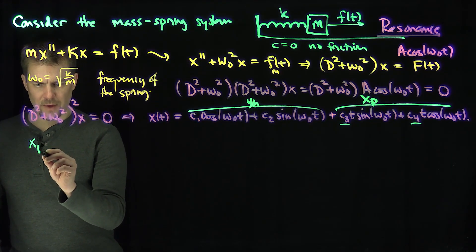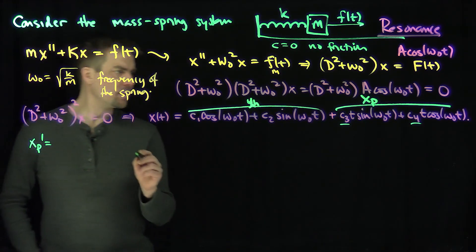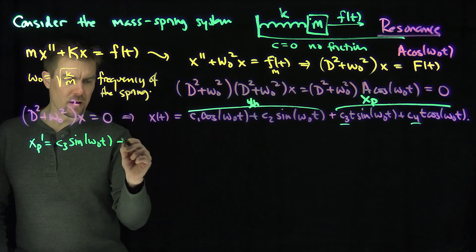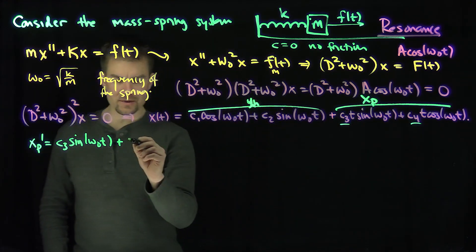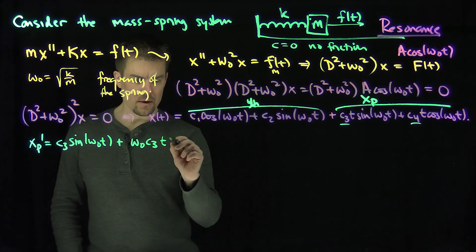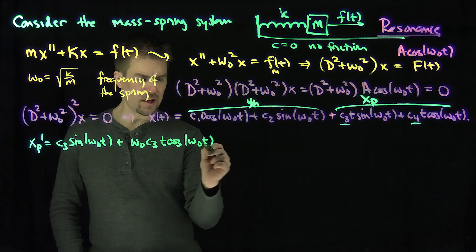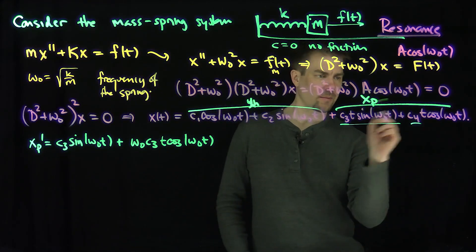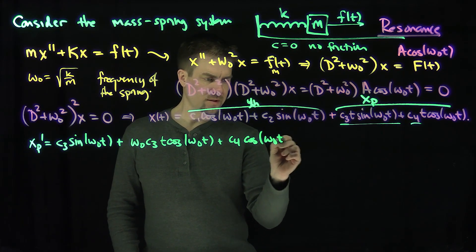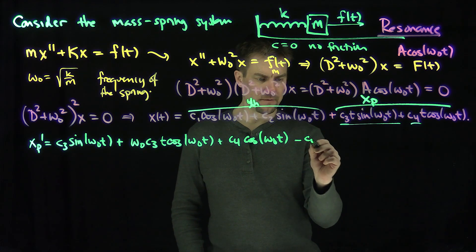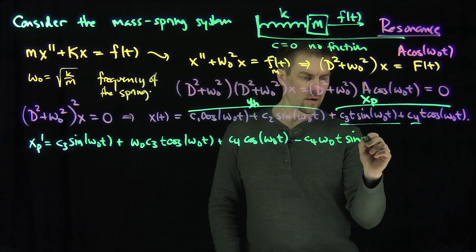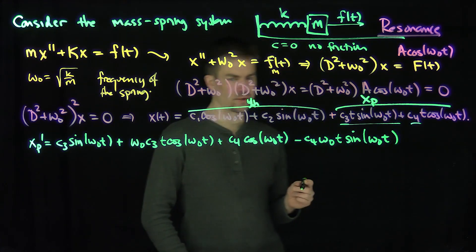Computing x_p prime: it's going to be c₃ sine ω₀t plus ω₀c₃t cosine ω₀t. The derivative of the other term gives c₄ cosine ω₀t minus c₄ω₀t sine ω₀t. That's the first derivative of the particular solution.